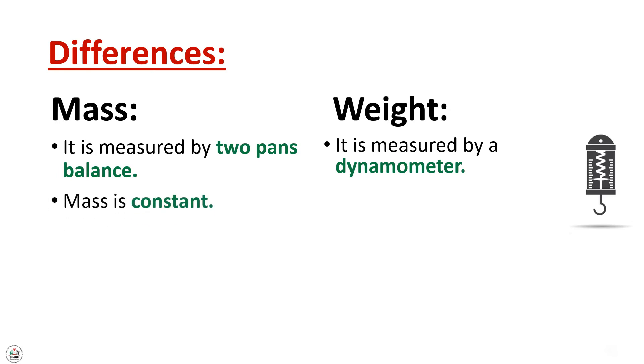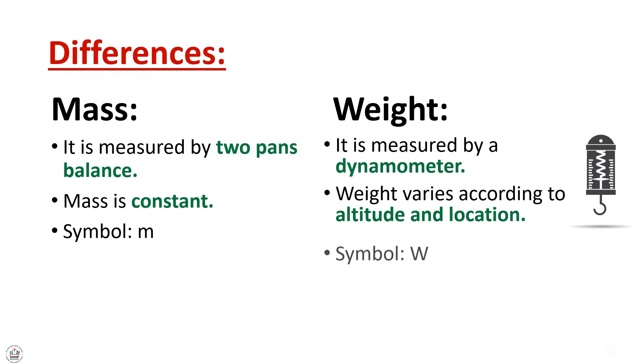Mass is constant. While the weight varies according to altitude and location. So the mass is not changing, but the weight is changing according to altitude and location. The symbol for mass is M, while the symbol for weight is W. The SI unit for mass is kilograms, whereas the SI unit for weight is newtons.